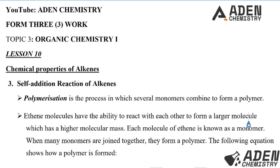Today in lesson 10, we want to proceed to the third chemical property of alkenes, which is the self-addition reaction of alkenes, known as polymerization. Polymerization is a process in which several monomers combine to form a polymer. Ethene molecules have the ability to react with each other to form a larger molecule which has a higher molecular mass. Each molecule of ethene is known as a monomer.